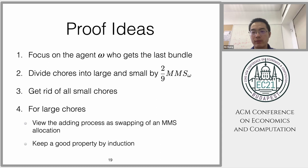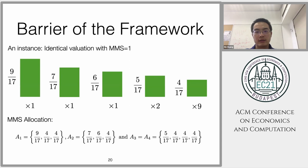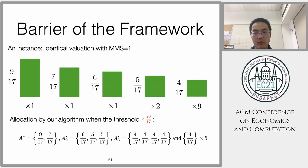Here I will show why this cannot prove better than 20/17. Here is an instance: we have one chore of 9/17 and nine chores of 4/17. For this instance, the maximum share is one, and you have an allocation at the bottom. But if we use our framework with threshold less than 20/17, then you can see that it doesn't work—you will have some chores that cannot be allocated.